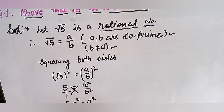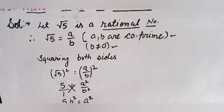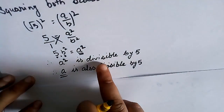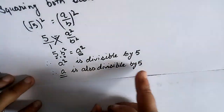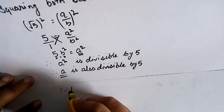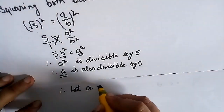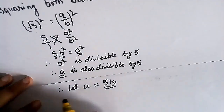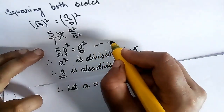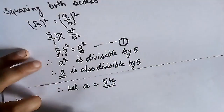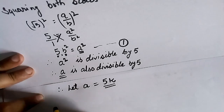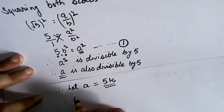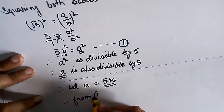Similarly, we have to prove the same for b. Since a is a multiple of 5, let a = 5k. We replace this value of a in equation number 1, which was 5b² = a². Substituting a = 5k: 5b² = (5k)² = 25k². Dividing both sides by 5 gives b² = 5k².